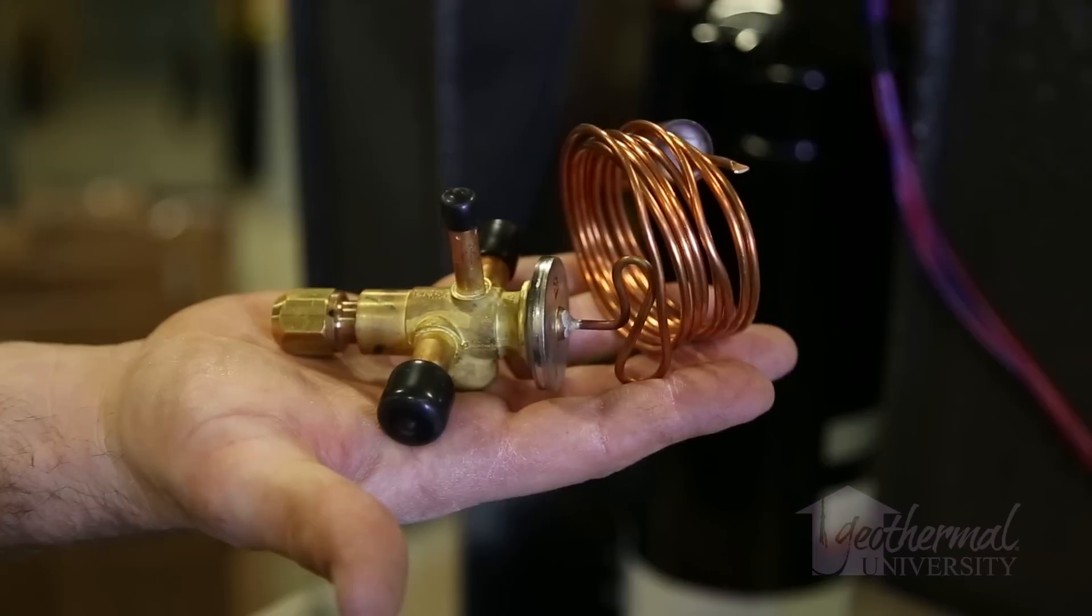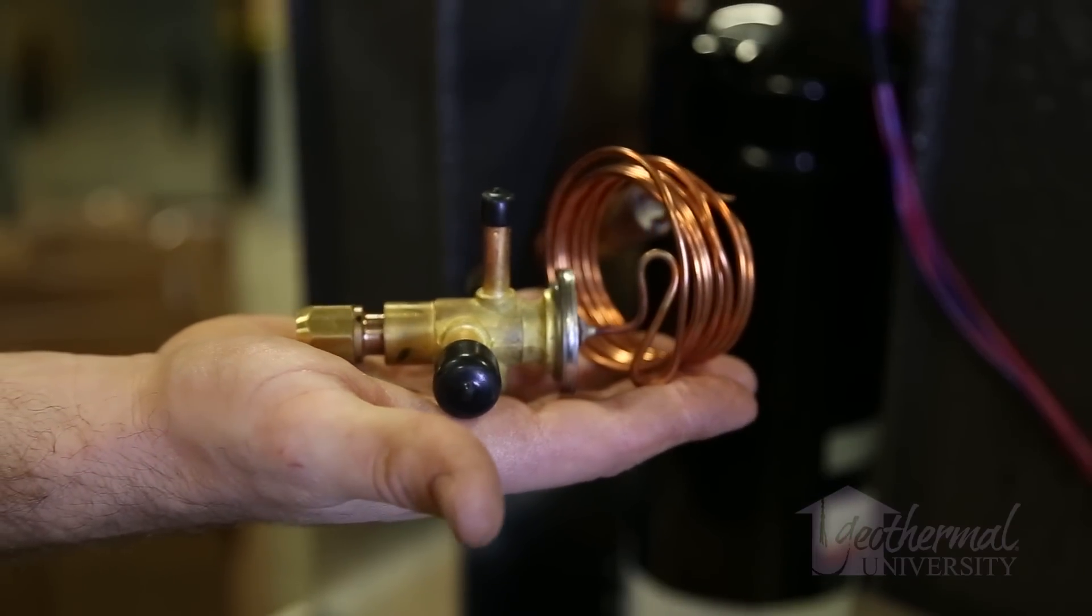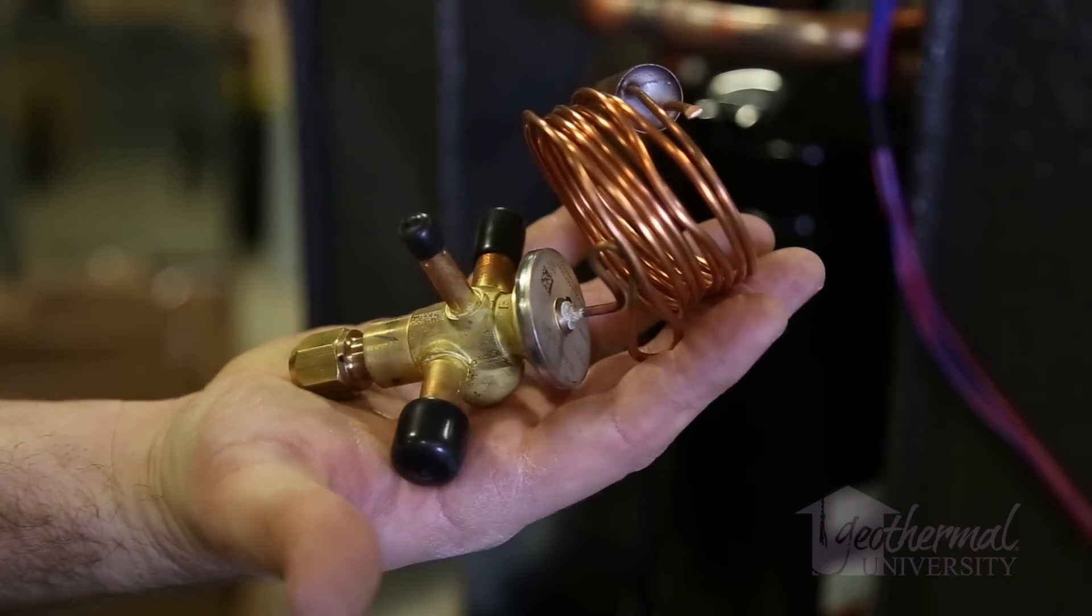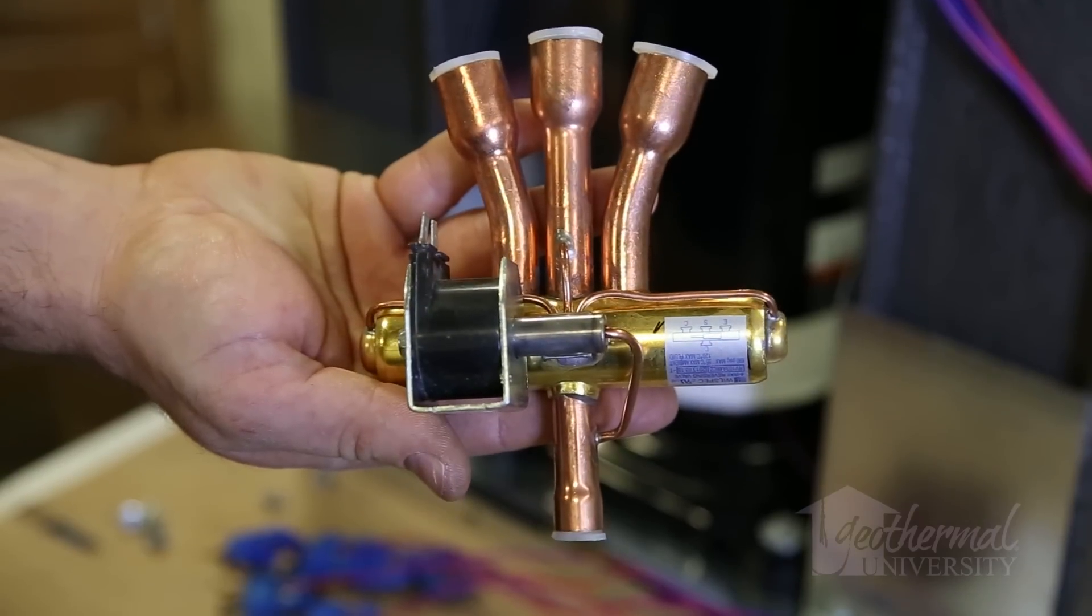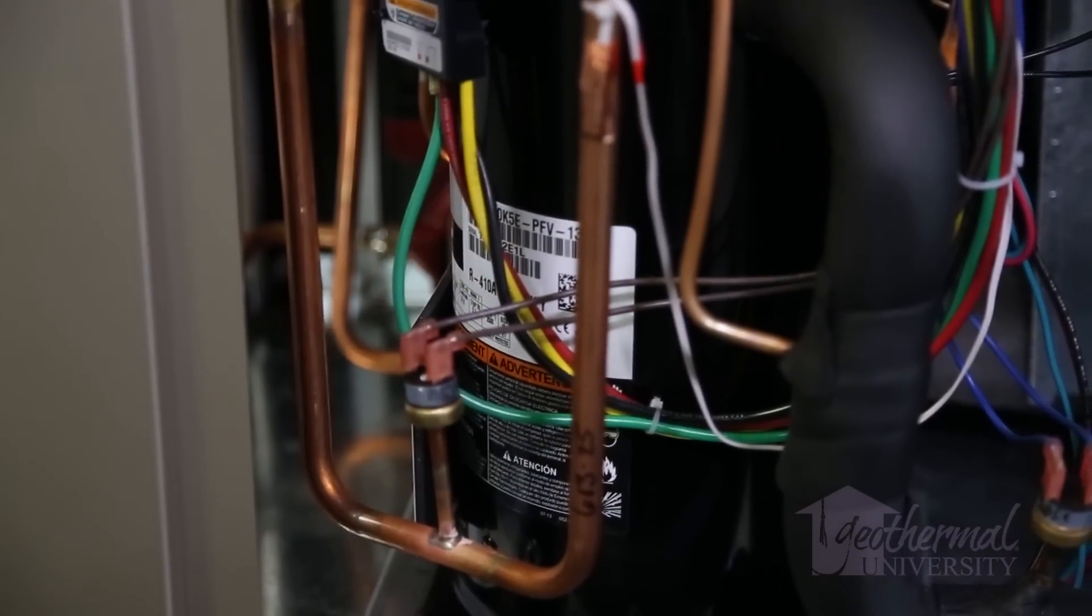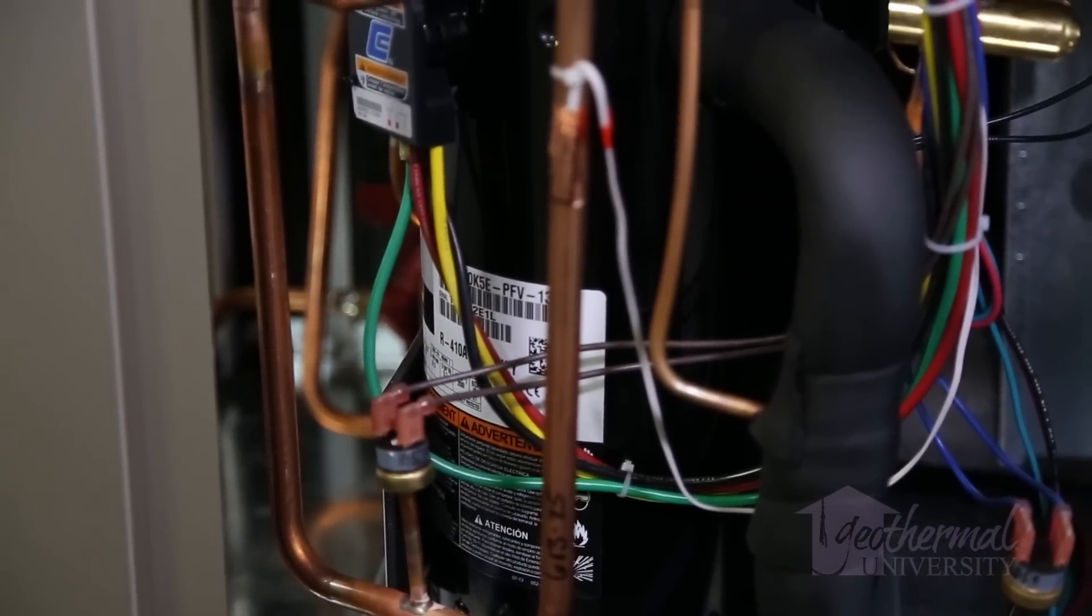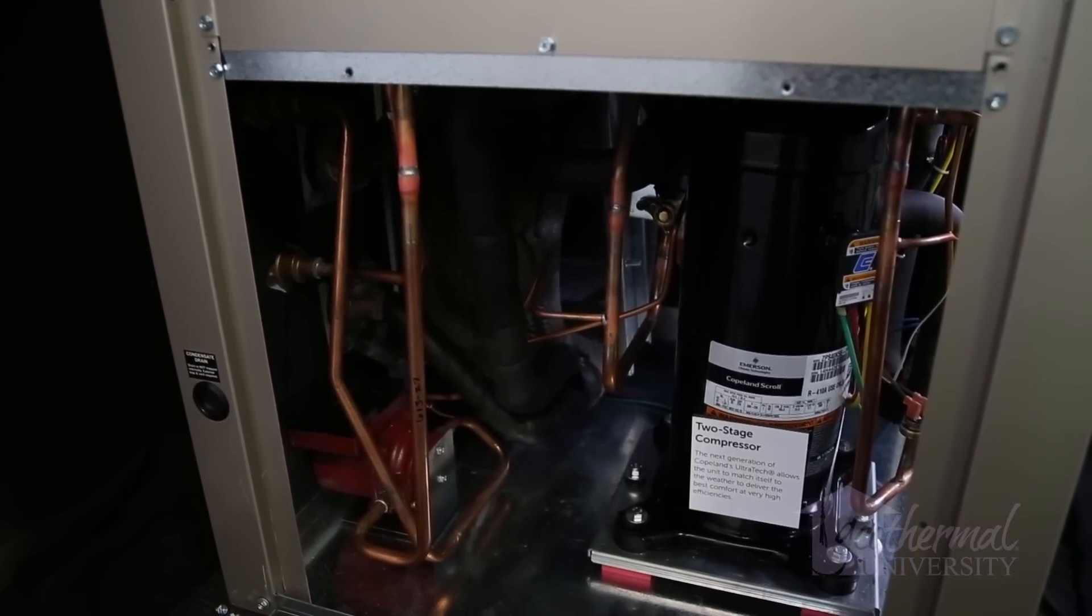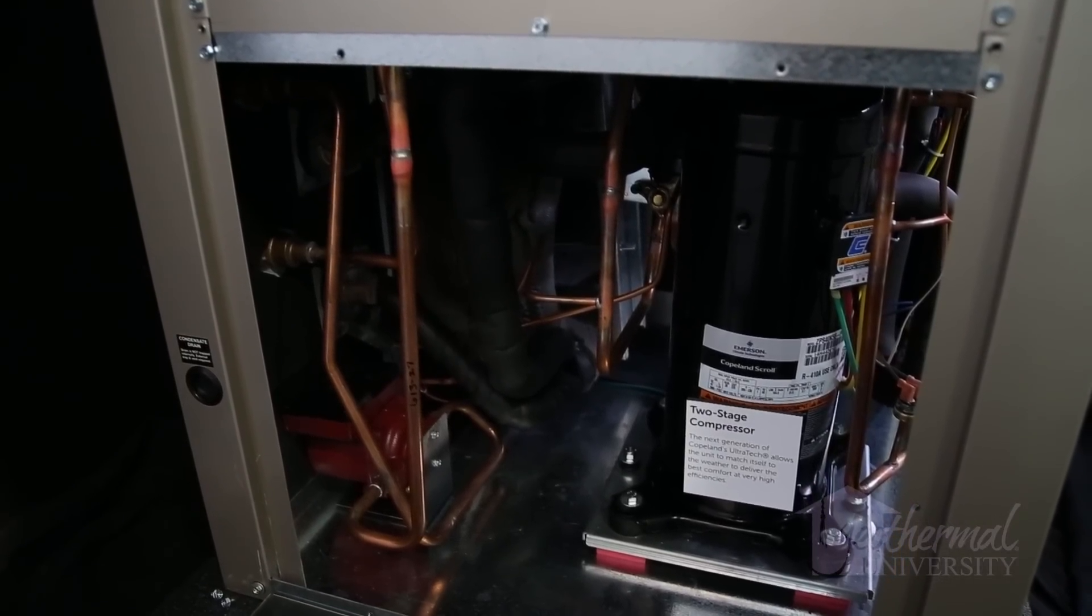As the AC unit is put into service, these oxide flakes dislodge and can become trapped in the TXV, reversing valve or metering orifice, leading to premature compressor failure. Manufacturers may not honor a component warranty if the failure is a result of improper brazing procedures.